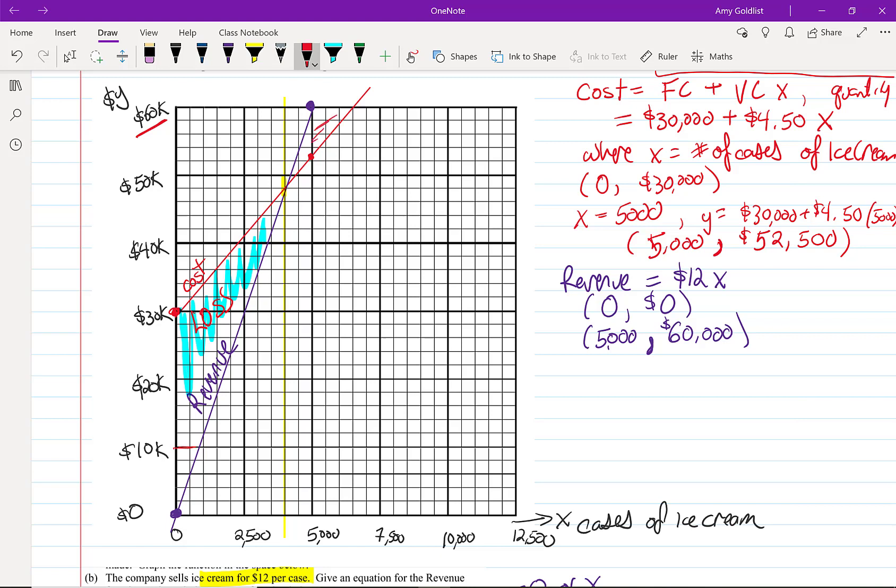When our revenue is higher than our costs, over here, this is a profit situation. So if we sell more than somewhere around 4,000, we'll be in a profit. And if we sell less than that, we will be in a loss.